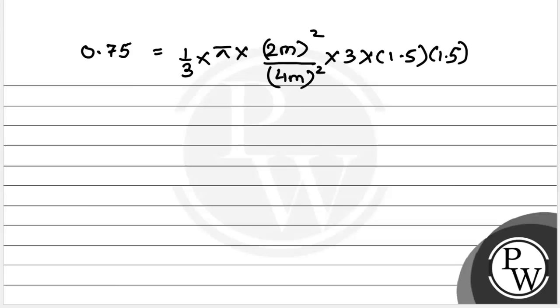0.75 equals 1/3 π times (2 meters / 4 meters)² times 3 times (1.5)² times dh/dt.